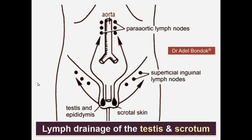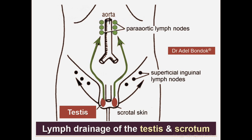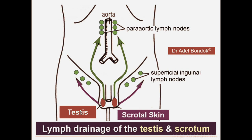Regarding lymphatics from the testis: they run along the testicular artery to the para-aortic lymph nodes. So the testis drains into the para-aortic lymph nodes. Regarding the scrotal skin, it drains into the superficial inguinal lymph nodes. The epididymis also drains along the testicular artery to the para-aortic lymph nodes.